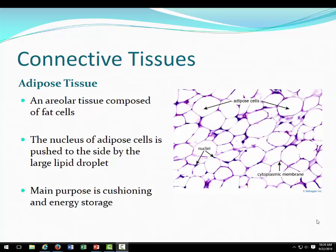If you look at adipose tissue, it kind of looks like chicken wire. You have these big open spaces because when we stain this tissue, the oil droplets don't take up the stain. Only the edges of the cell take up stain, so there's thin edges and you can see a nucleus pushed to the edge of the cell. Under a microscope you'll see these big open cells looking like chicken wire.